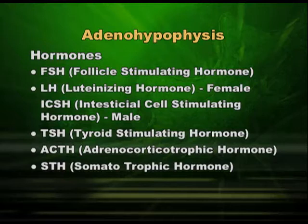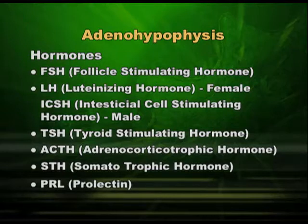The last hormone from the anterior pituitary is prolactin. For prolactin, we have an inhibitory factor in the hypothalamus, and it is secreted only when our body has a particular physiological situation like pregnancy and lactation. In any case, prolactin is the sixth hormone coming out from the anterior pituitary.